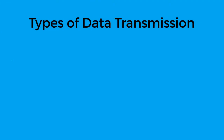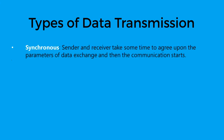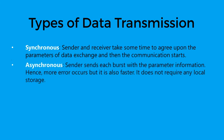We also need to know the types of data transmission. Data transfer can be synchronous, where a sender and receiver take some time to agree upon the parameters of data exchange before communication starts. It can also be asynchronous, where the sender sends each burst with the parameter information. Hence more error occurs, but it is also faster, and it does not require any local storage at the terminals.